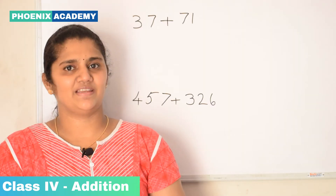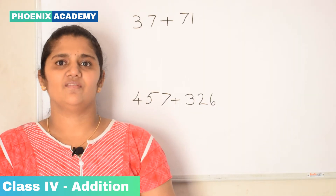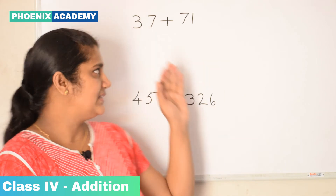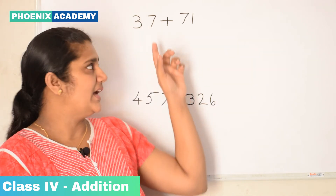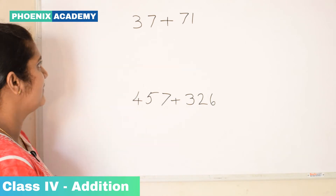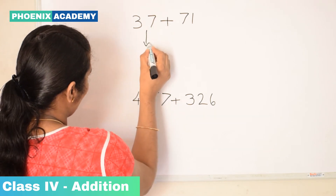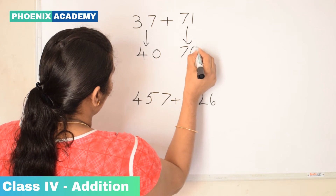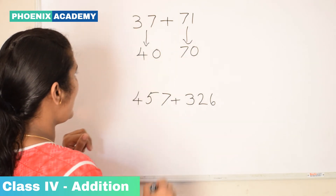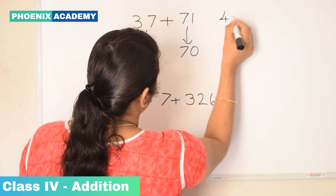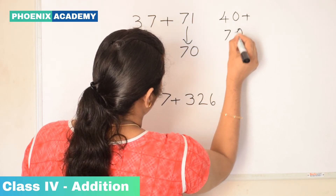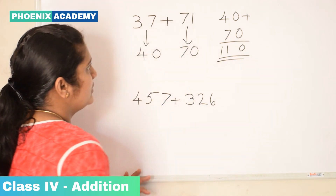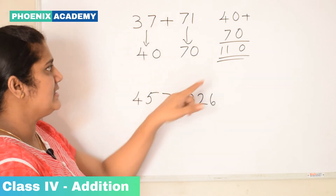Now let's learn estimating the sum. For estimating the sum, we round off the given numbers and find their sums. Let's try this example: 37 plus 71. We are rounding off these numbers to the nearest 10. 37 rounds to 40, and 71 rounds to 70. Then 40 plus 70 is 110. So the estimated sum of 37 and 71 is 110.